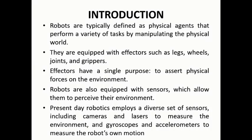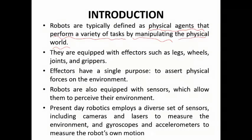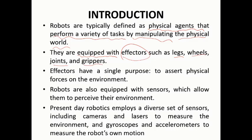In the introduction, robots are typically defined as physical agents that perform a variety of expert tasks by manipulating the physical world. By understanding the physical world, they can do a number of tasks for us. They are built with effectors — like legs, wheels, joints, and grippers — and most robots have these kinds of components inside.